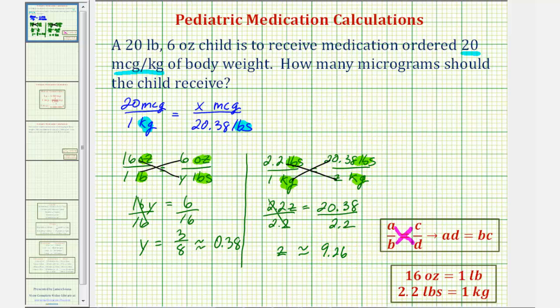So finally we have the proportion that we need to solve this problem. We can replace twenty point three eight pounds with nine point two six kilograms. So twenty micrograms is to one kilogram as x micrograms is to nine point two six kilograms.